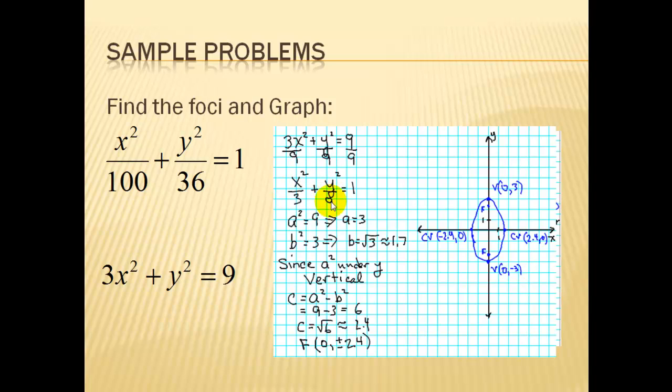So now our bigger number is under y squared. So this is a vertical ellipse. And a is going to be the square root of 9. This is b squared. To find b, we have to take the square root of it. So we get radical 3, which is approximately 1.7. Since we're vertical, to get to the foci, well, first we calculate c using our formula. And then to get to the foci, we're going to go up and down.